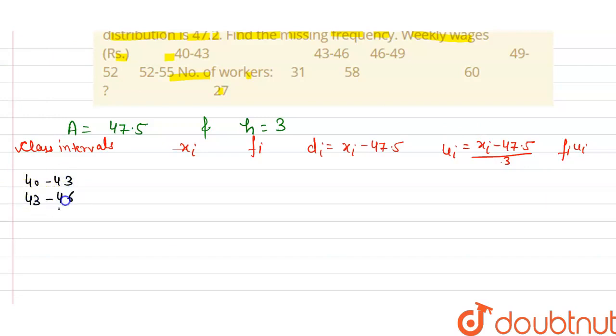Now xi's are 41.5, 44.5, 47.5, 50.5, and 53.5.